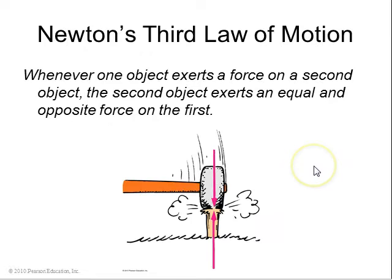So Newton's third law of motion is whenever one object exerts a force on a second object, the second object exerts an equal and opposite force on the first. Example is this hammer exerts a force on this spike. The spike exerts an equal and opposite force upward on the hammer.